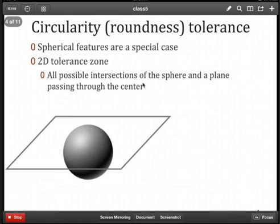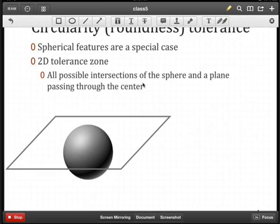The special case of spherical features, or we think of roundness of a ball, so to speak. If we look at the sphere, it has a center point. And if I pass a plane through that center point, then we're going to end up with a circle.